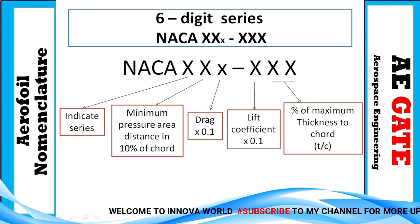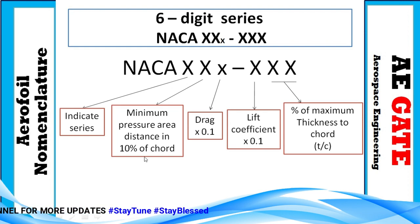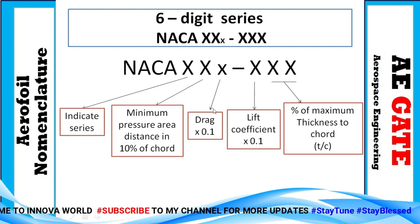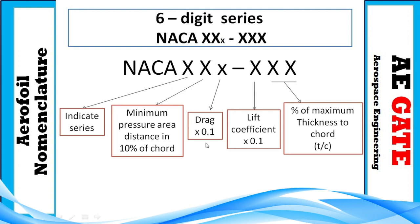In the six-digit series, there is an additional small 'x' compared to the one-series — that is the key difference. The first digit indicates the series (6), and the second digit indicates the maximum pressure area distance from the chord. The small 'x' denotes the drag bucket range — multiply by 0.1 to get the value. After the hyphen, the digit represents the lift coefficient, also multiplied by 0.1. The last two digits are the maximum thickness-to-chord ratio.